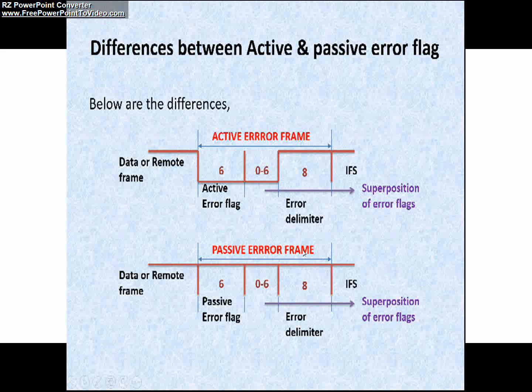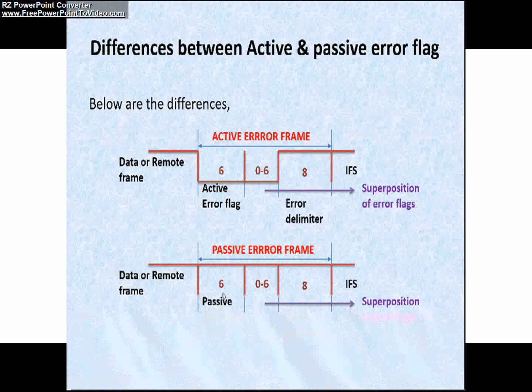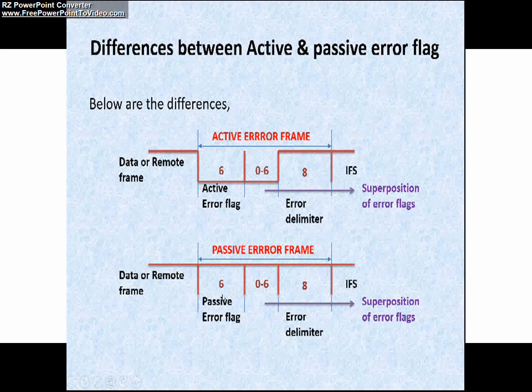Next, coming to the passive error frame format, you can see if the passive node detects the error in the CAN network, the passive error frame structure looks like this. That means there are no dominant bits in this frame structure. You can see 6 recessive bits that is passive error flag and 0 to 6 recessive bits superposition of error flags.